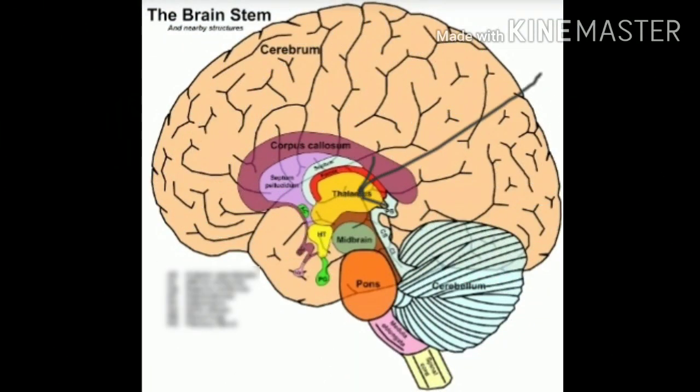Thalamus is situated below the cerebrum and acts as a relay station of impulses to and from the cerebrum.